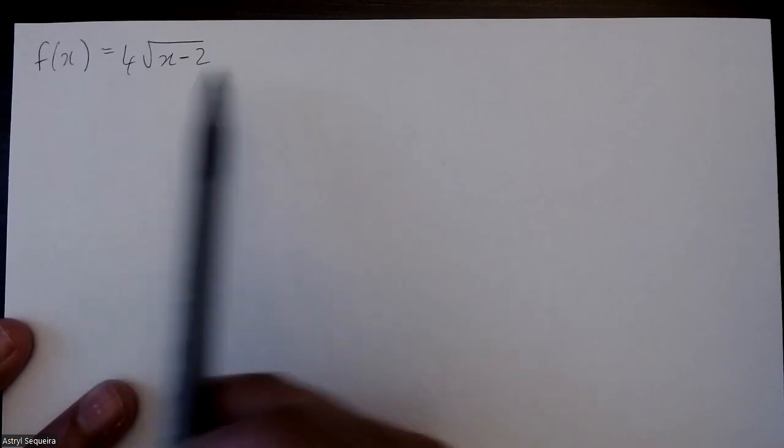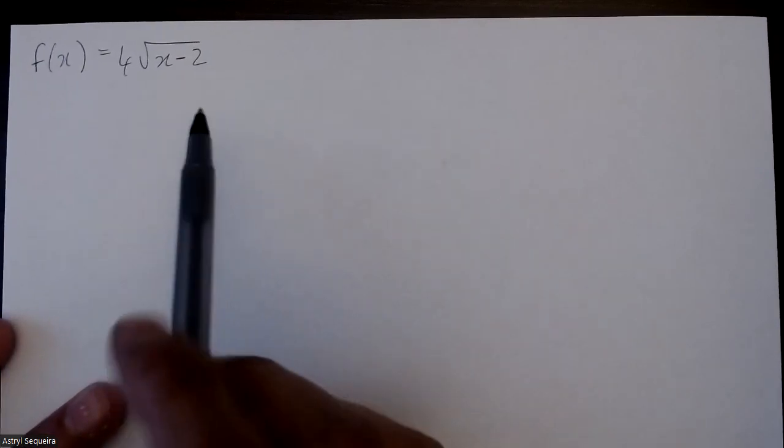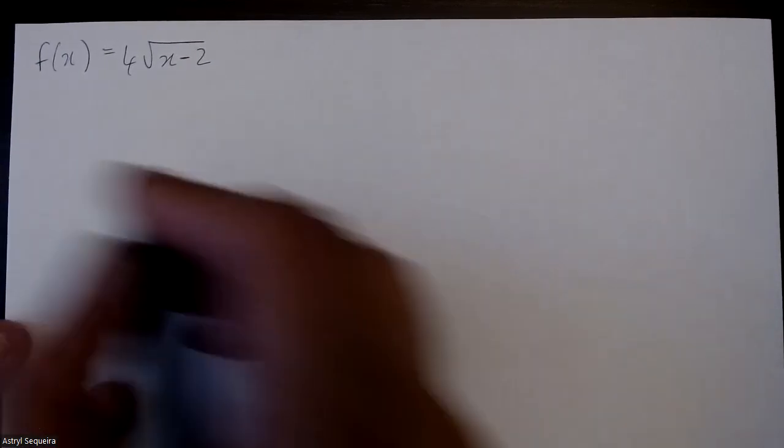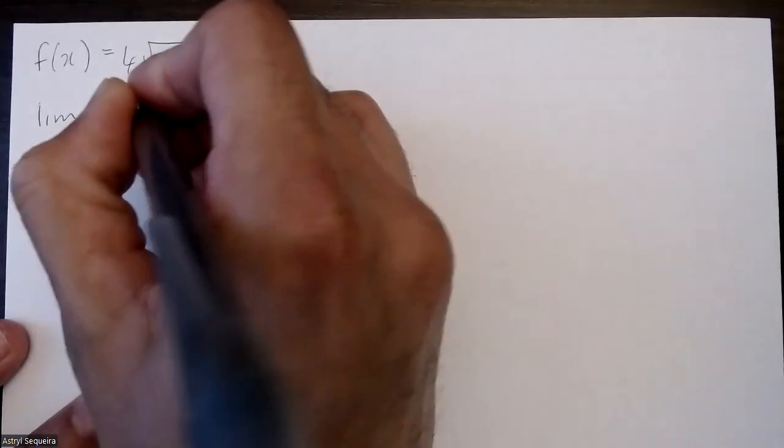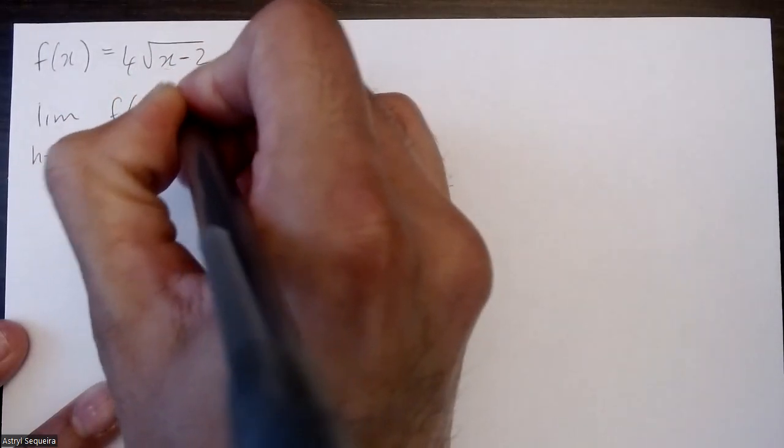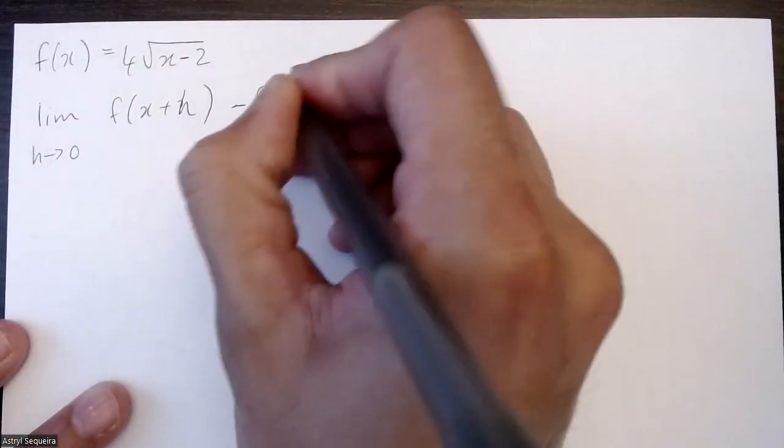Alright, so we want to derive this radical function here and we want to use first principles. So our equation for first principles is lim h approaches 0, f of x plus h minus f of x, divided by h.